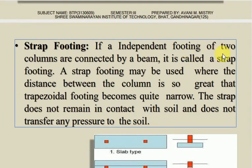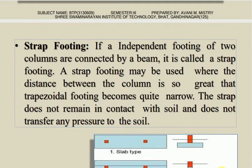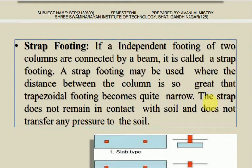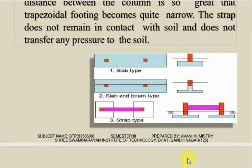The next one is strap footing. If the independent footings of two columns are connected by a beam, that is called strap footing. A strap footing may be used where the distance between the columns is so great that a trapezoidal footing becomes quite narrow. The two columns are connected by a strap beam. The strap does not remain in contact with the soil and does not transfer any pressure to the soil.